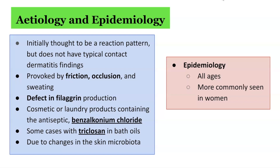In recent years, there have been some preservatives and ingredients of cosmetic and laundry products which are thought to be culprit agents, particularly benzalkonium chloride as well as triclosan in bath oils. These chemicals may also result in a change in the skin microbiome, which may lead to the skin lesions observed in granular parakeratosis.